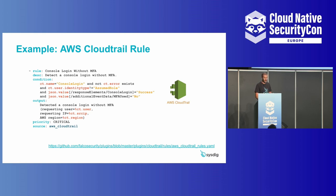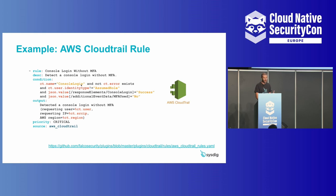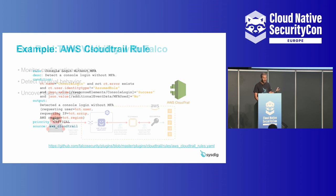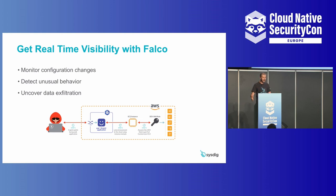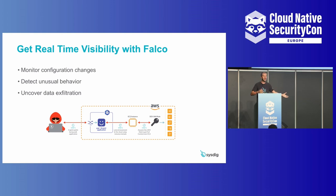Here is an example of a rule. The Falco syntax is not hard. This rule detects console login without multi-factor authentication. The condition is the filter that Falco looks for in the events — it's pretty readable and allows you to express Falco rules using CloudTrail events. You can write your own rules, but you don't have to because Falco comes equipped with a nice set of default rules that detect configuration changes, unusual behavior from users, data exfiltration from S3 buckets, somebody making an S3 bucket public, or somebody accessing sensitive data on a bucket — all already part of the default rules when you deploy Falco for CloudTrail security.